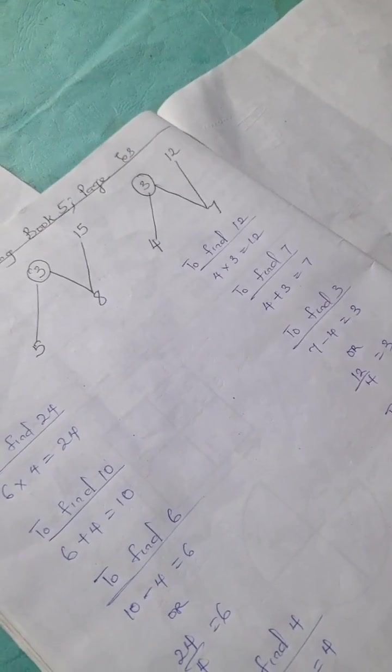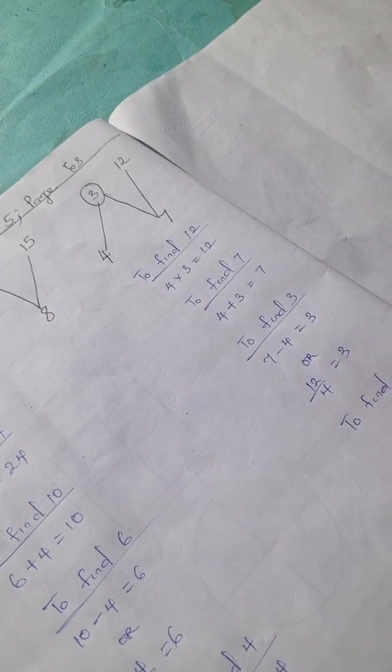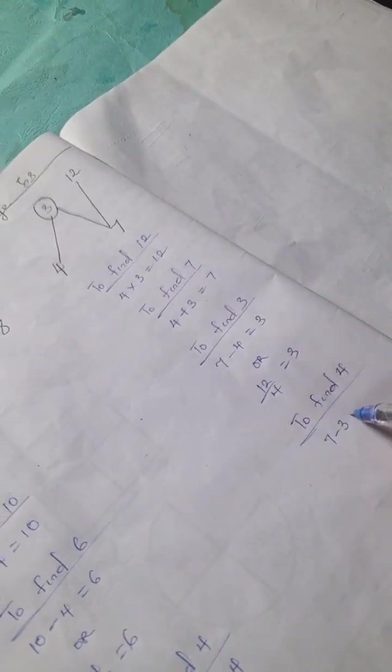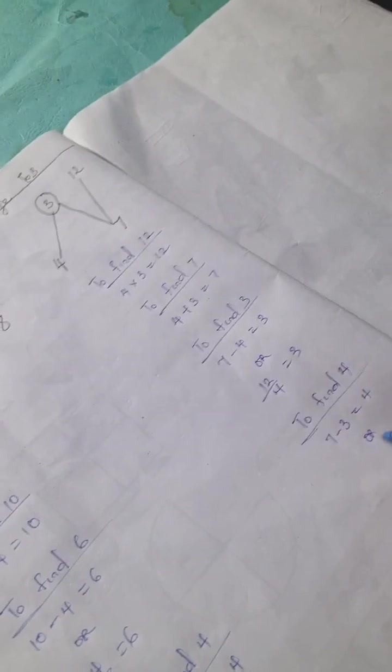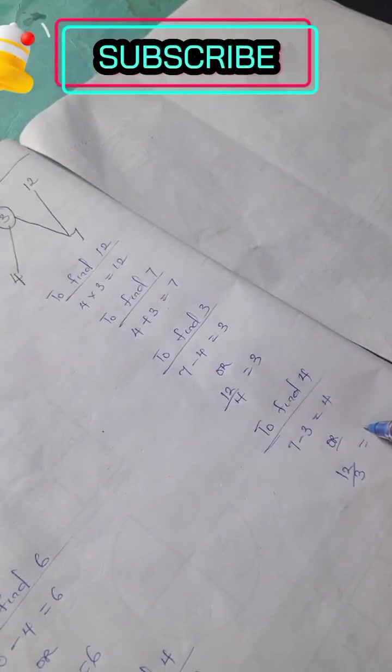And lastly, to find - don't forget to subscribe and like this channel. So to find 4, we have 7 minus 3 is 4 or 12 divided by 3 is 4.